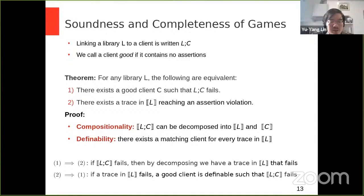As I said before, our games have been proven, were proven sound and complete. By this, we mean that all errors reachable in the library through our games correspond to a definable client C, such that composing the library L and the client C concretely leads to that error, and vice versa. For this, we needed compositionality and definability. Once definability and compositionality are shown, which is the tricky part, soundness just falls into place.